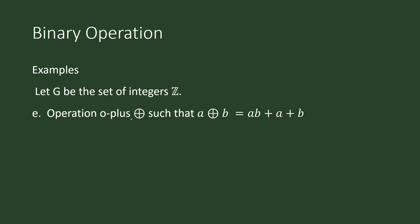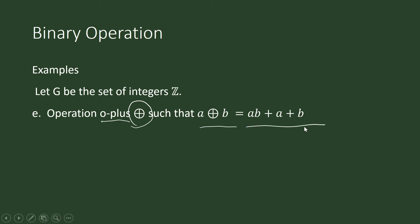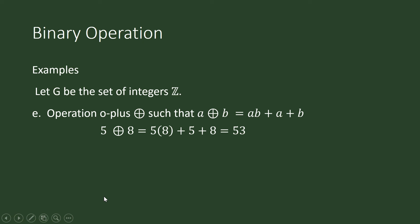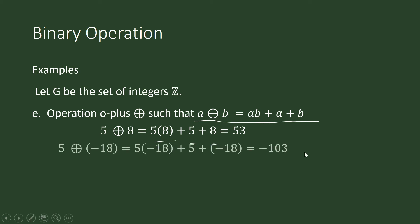Let G be the set of integers. We shall define a custom operation o-plus — not ordinary addition, but a new operation. We define it as: a o-plus b equals a times b plus a plus b. So 5 o-plus 8 equals 5 times 8 plus 5 plus 8. And 5 o-plus negative 18 equals 5 times negative 18 plus 5 plus negative 18, which equals negative 103.